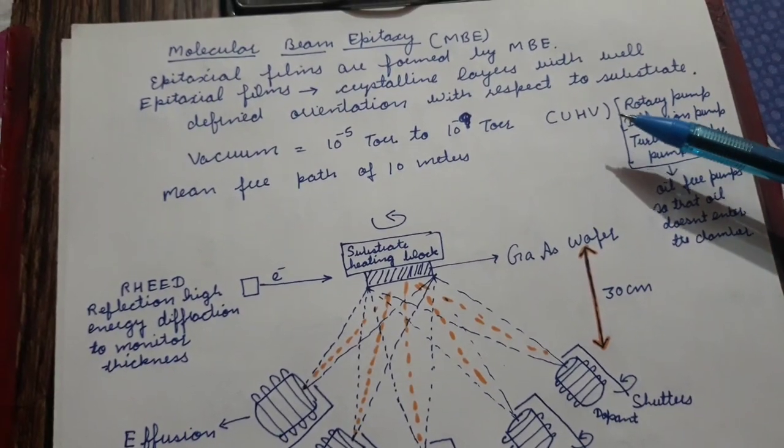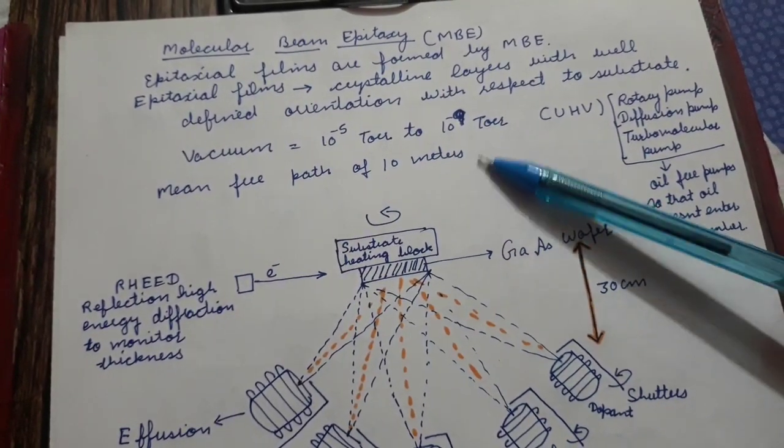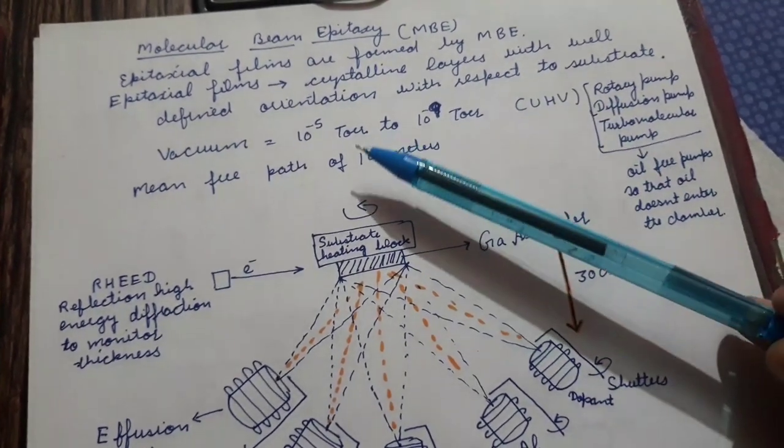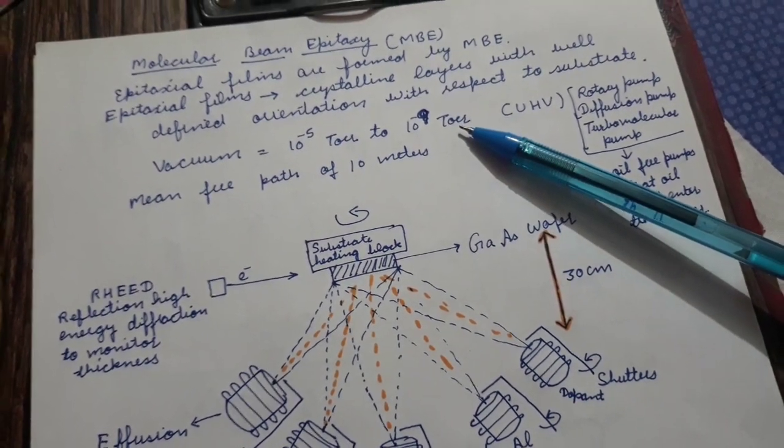That is why it is called epitaxial films. Such molecular beam epitaxy films can be grown at very high vacuums, ultra high vacuums, of the order of 10 to the power minus tor of pressure.